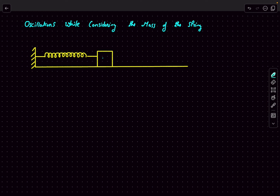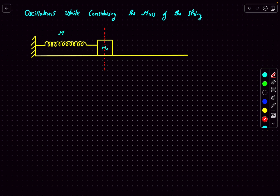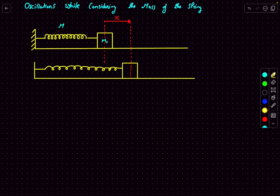Let's consider the mass of the block as small m and the mass of the spring as capital M. So let's say this is the equilibrium position and we displace our mass m to the right by an amount x — this is how the situation is now looking. The velocity of the block at this particular point is v, and we can also say that the velocity of the block is simply dx/dt, or ẋ.